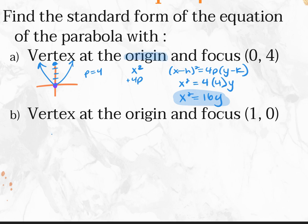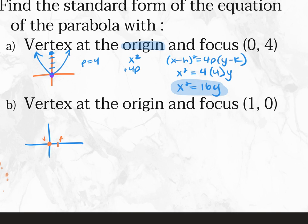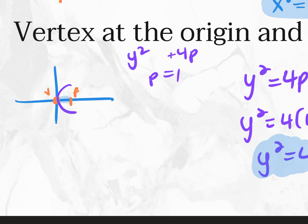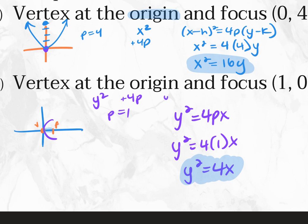Example 4B: vertex at the origin, focus at (1, 0). It points to the right, which means Y is squared and 4P is positive. P equals 1. The general equation is Y squared equals 4PX. Plugging in P equals 1: Y squared equals 4X. If the vertex is at the origin, H and K are 0 and drop out. You can always use the full form — it's just simpler when the vertex is at the origin. If the vertex is not (0, 0), you must use the expanded form.